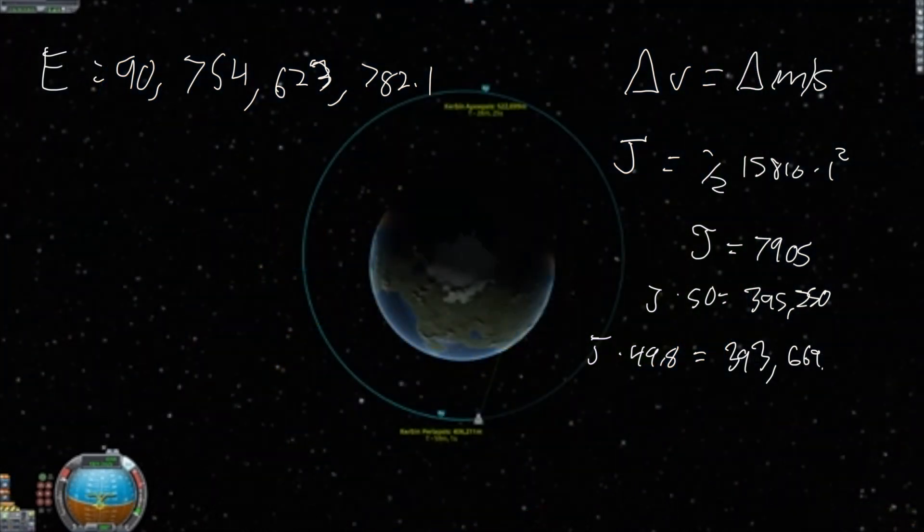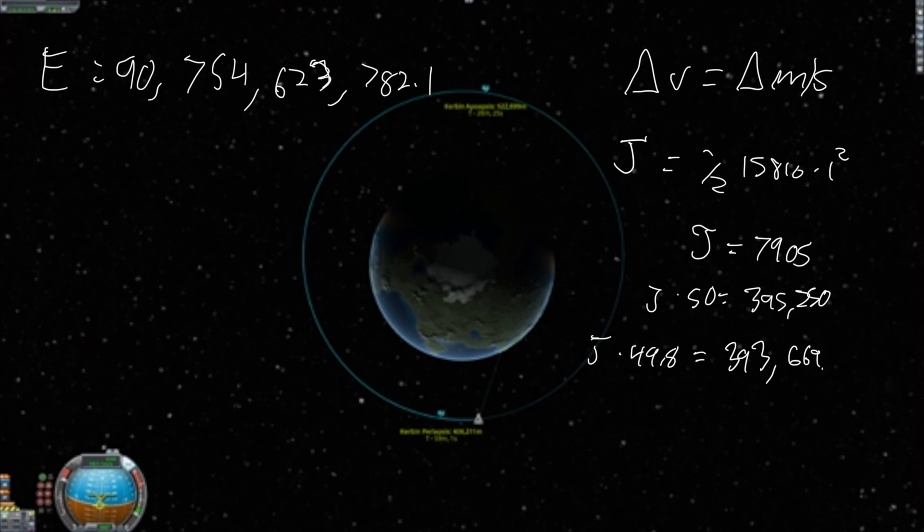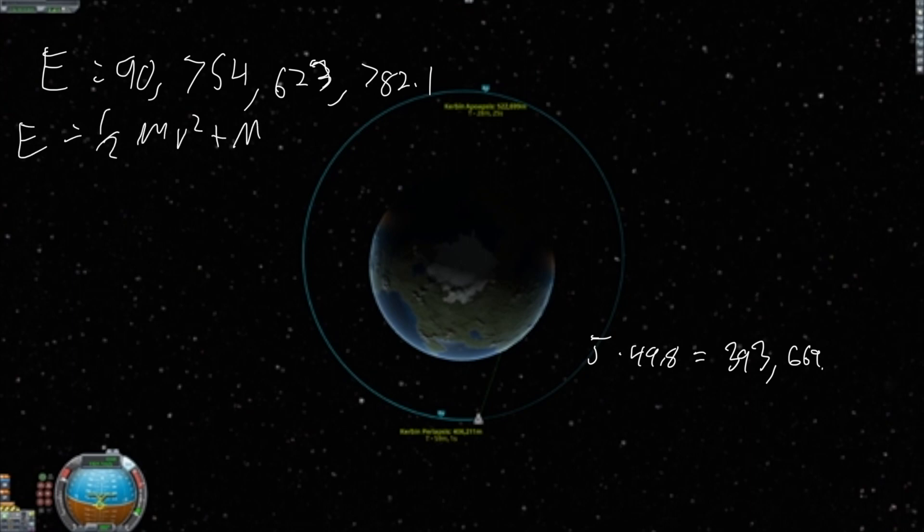Now we can see that our orbit has changed. We can see that our periapsis is more or less the same as before, but the apoapsis is much different. As you can see, the apoapsis is pushed up. When I burn in the correct direction, we can now fill out the equations for energy kinetic and energy potential again to find our new orbit energy.